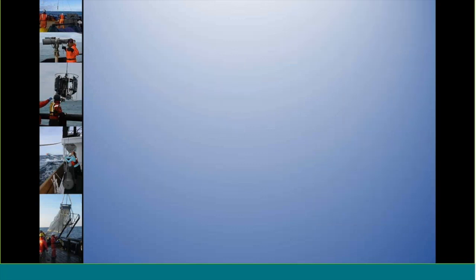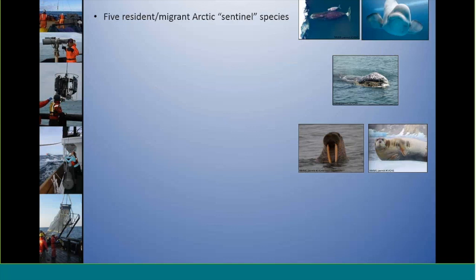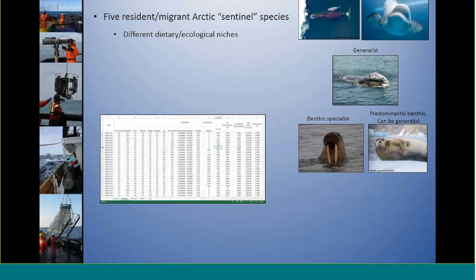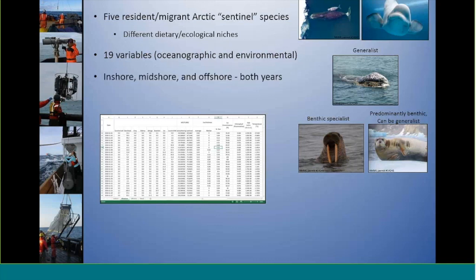A little more detail on the GAM models: we focused on five resident or seasonally migrant Arctic species that serve as good sentinels for climate change based on their different dietary and ecological niches. We input 19 different oceanographic and environmental variables, and we ran the GAMs for all three locations for both years, which resulted in over 500,000 models.